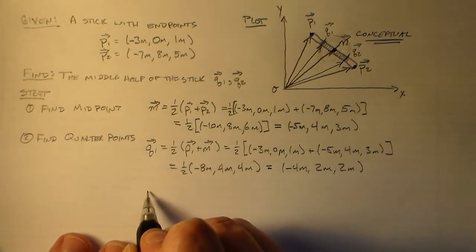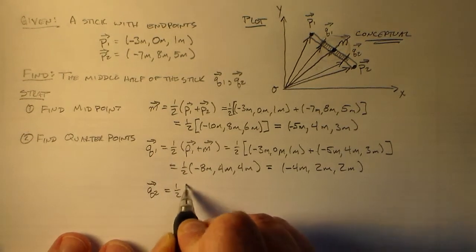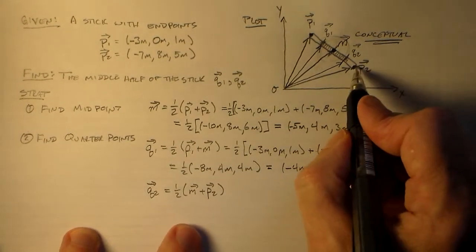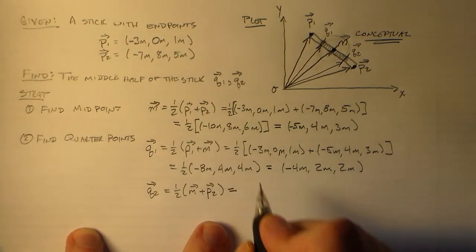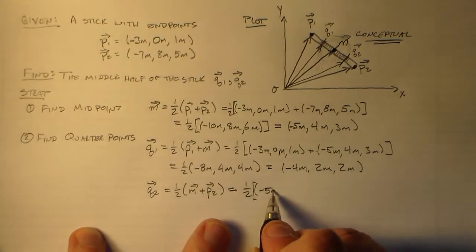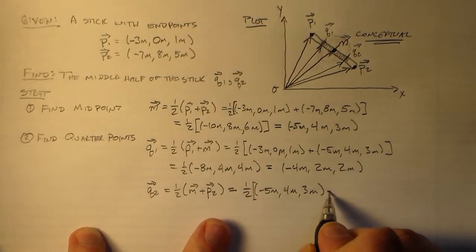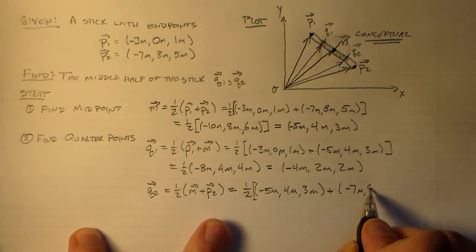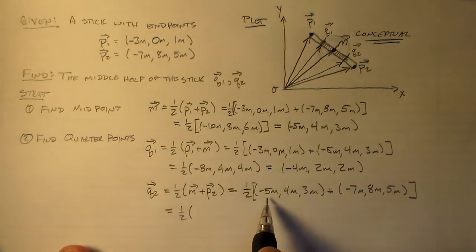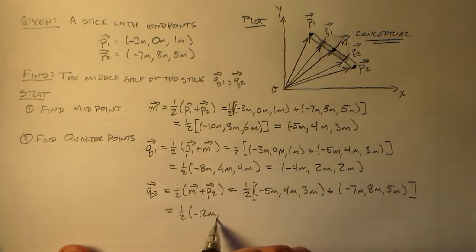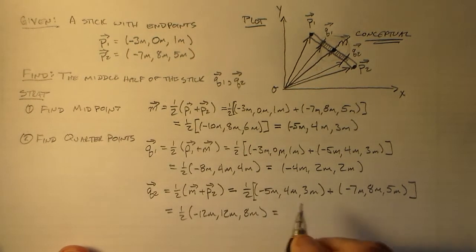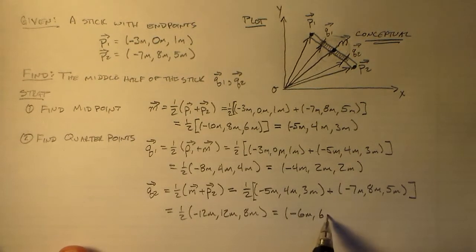And we'll do it again. Hey, we're on a roll. Let's not mess anything up. So we add M to P2 this time, the midpoint to the other end point of the full stick. And so we start off by substituting the midpoint minus five meters, four meters, three meters, and keeping the end point minus seven meters, eight meters, five meters. And we add them all up. Minus five, minus seven, that's minus twelve meters. Four, eight, twelve meters. Three, five, eight meters. Minus six meters, six meters, four meters.